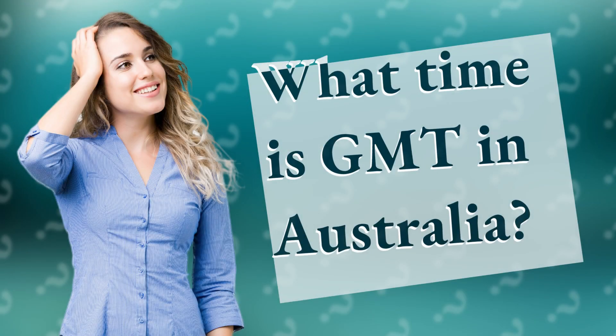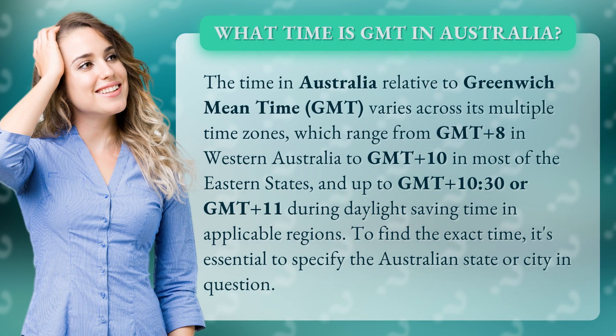What time is GMT in Australia? The time in Australia relative to Greenwich Mean Time, GMT, varies across its multiple time zones, which range from GMT plus 8 in Western Australia to GMT plus 10 in most of the eastern states, and up to GMT plus 10.30 or GMT plus 11 during daylight saving time in applicable regions. To find the exact time, it's essential to specify the Australian state or city in question.